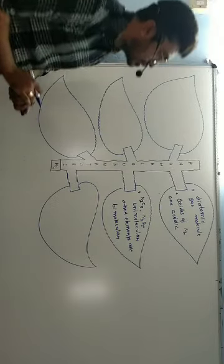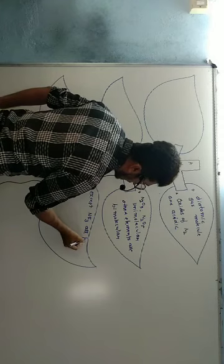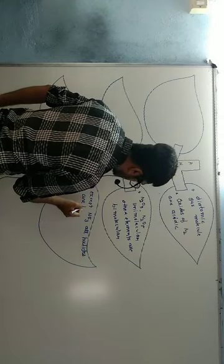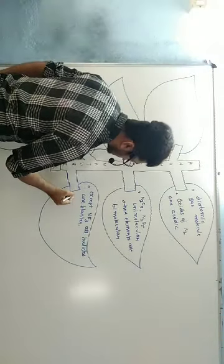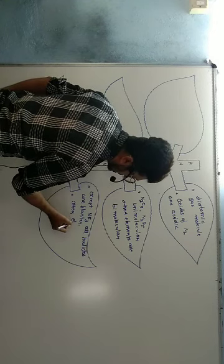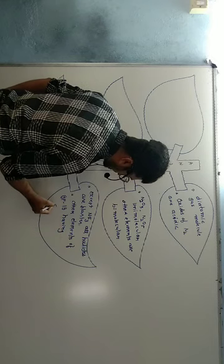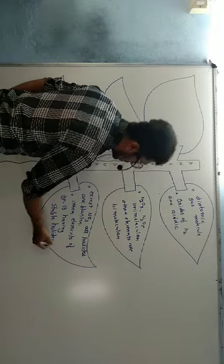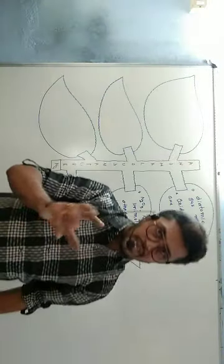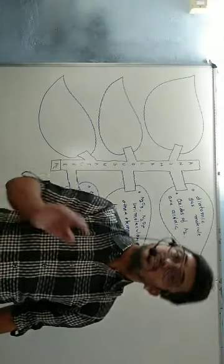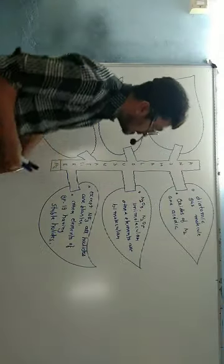The third important point is that except NF3, all halides of nitrogen are explosive. The other elements of group 15 — phosphorus, arsenic, antimony, bismuth — form stable halides and do not have this explosive property. So nitrogen is again different from every other element of this group in terms of its halide stability.